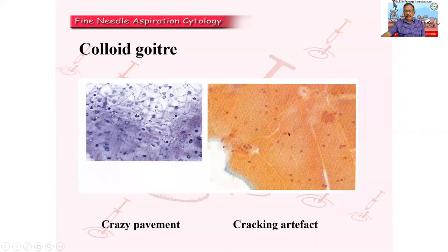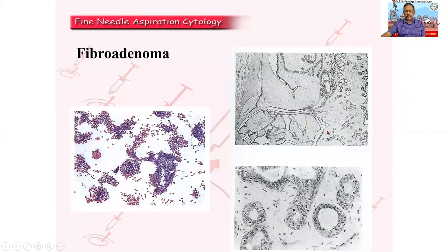This is an aspirate from the thyroid — I am finding it has a pavement-like pattern that is classical of colloid. So in colloid goiter, this will be the appearance. And some of the swellings, like fibroadenoma in a young lady — a good aspirate can be obtained, we can make a diagnosis — this is the histological counterpart of it.